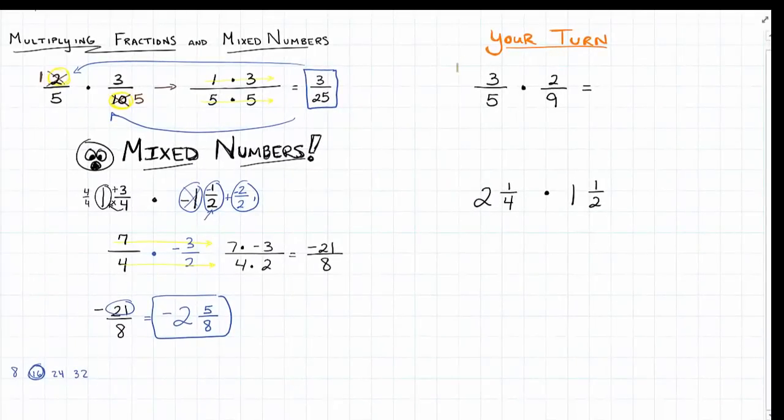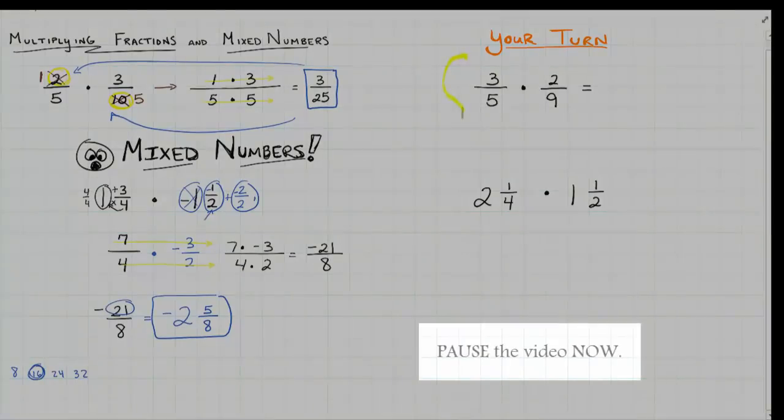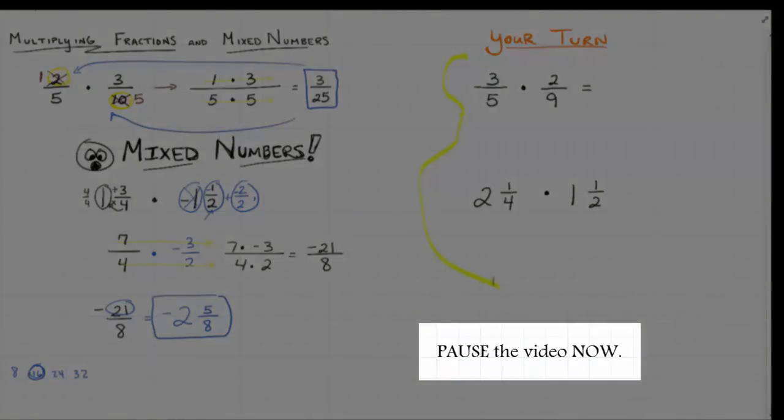Alright, it's your turn. Copy down 3 fifths times 2 ninths, and also 2 and 1 fourth times 1 and a half.